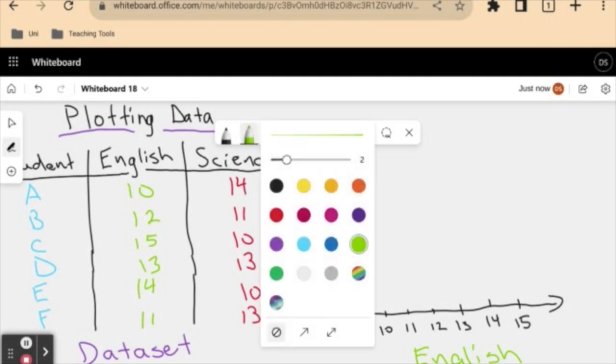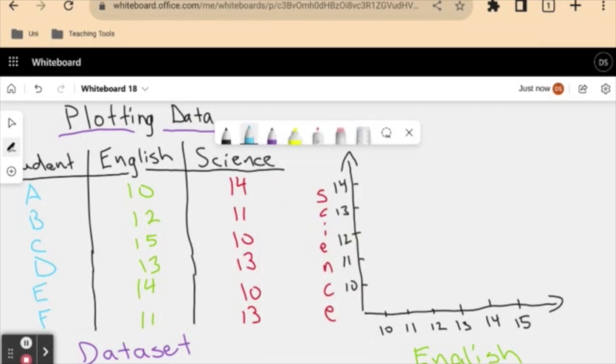So let's start with student A. Student A, I'll get this in blue, scored 10 in English, scored 10 in English, 10 here, but 14 in science, all the way up here. So I can take my student A and say, well, we've got 10 in English, so I'm just going to draw this little dotted line going all the way up and got 14 in science. So I can draw a point that lines up with a mark of 10 in English and a mark of 14 in science, and that will be my student A.